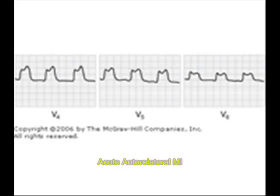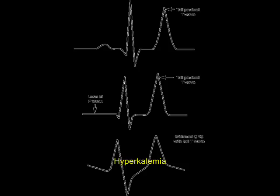Now let us see abnormalities in electrolyte disturbances. First, hyperkalemia. In hyperkalemia you will see big tent-shaped T waves. You can see here very clearly — the T wave is as big as the QRS complex. This is very characteristic of hyperkalemia, that is high potassium level in the blood.